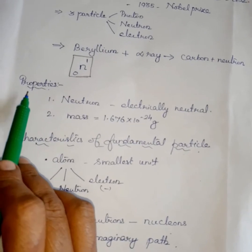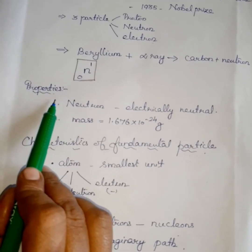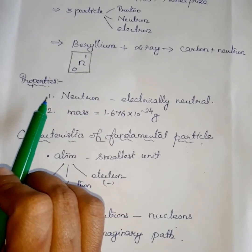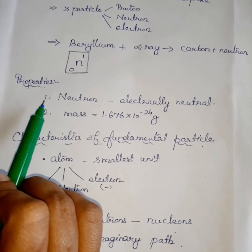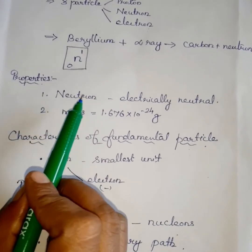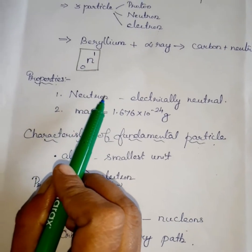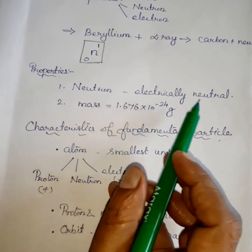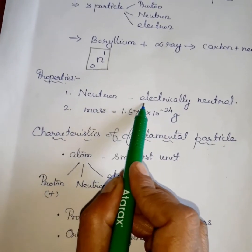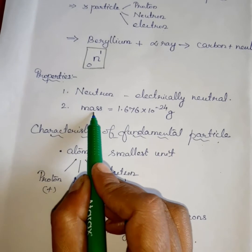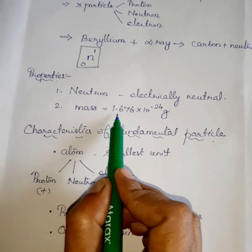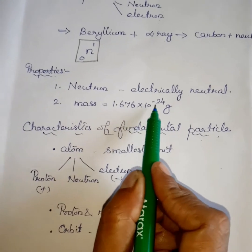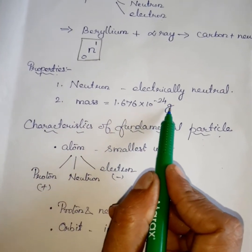Now we are going to study the properties of neutron. These particles are not deflected by any magnetic or electric field, confirming that the neutron is electrically neutral. The mass of the neutron is equal to 1.676 × 10⁻²⁴ grams.